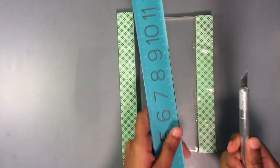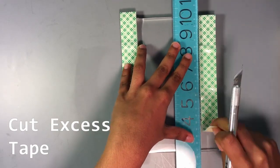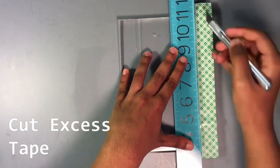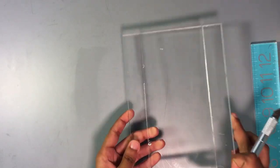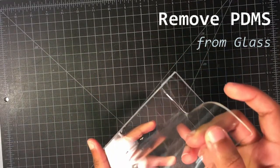First, use a ruler and an exacto knife to slice off the tape around the edges. Discard these pieces. Prepare a cutting board and peel off the PDMS from the glass plate, being careful to avoid any tears.